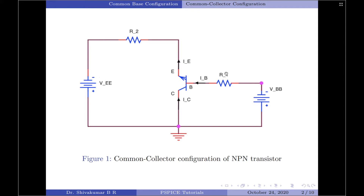In the common collector configuration, the load resistance is connected in series with the emitter terminal, so the load current equals the emitter current. By convention, the base and collector currents flow into the transistor and are called positive currents. Since the emitter current flows out of the transistor, it is regarded as negative. The emitter current is the sum of the collector and base currents, so the load resistance has both the collector current and base input current flowing through it. The current gain is then given as follows.